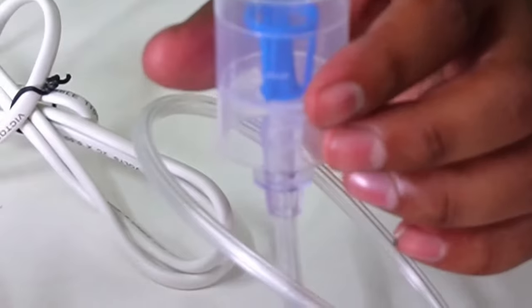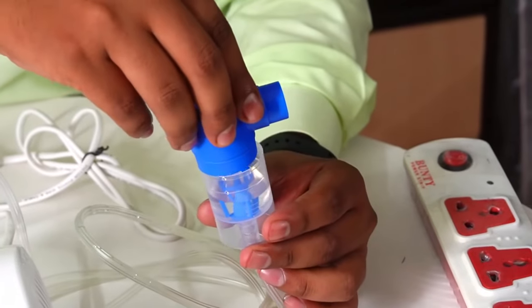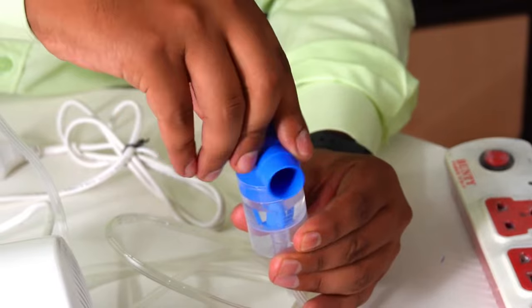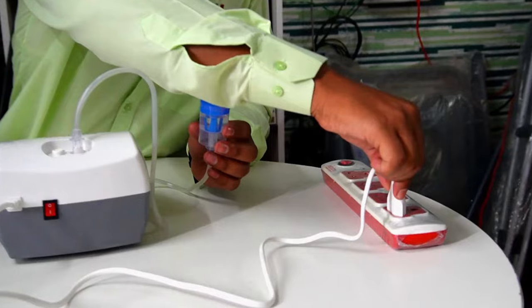Next, open the medicine chamber by lifting up the blue cap. Pour the required quantity of medicine into the medicine chamber using the clear ML markings. Close the medicine chamber by securing the cap back on.